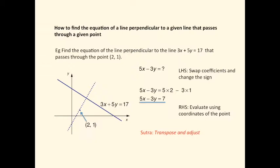Take the values of x is 2 and y is 1, implant them into the left-hand side and evaluate. We arrive at 5x minus 3y equals 7.